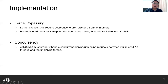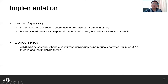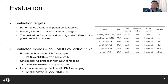CoLMMU must properly handle concurrent pinning and unpinning requests with multiple vCPU threads. People can refer to our paper for detailed description of the concurrency handling.